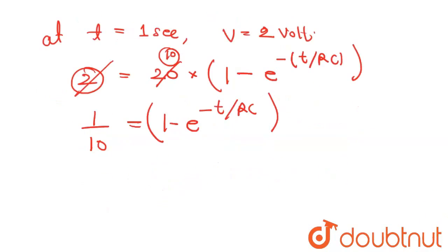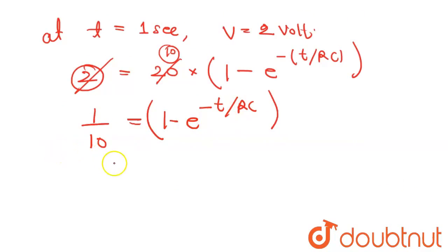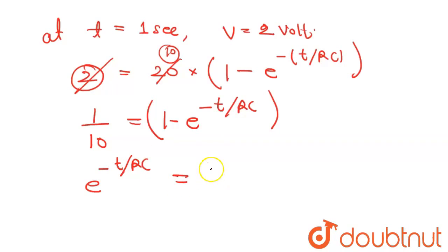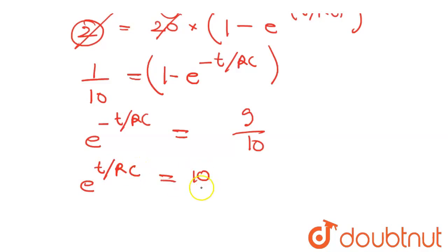Let's simplify it. Rearranging the left-hand side: e raised to the power minus t over RC is equal to 1 minus 1 over 10, which equals 9 over 10. Making the power positive and taking the reciprocal: e raised to the power t over RC is equal to 10 over 9.